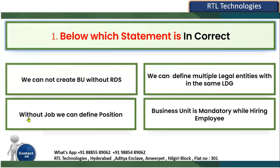The third statement is: without the job, we can define a position. This is incorrect — it is not possible. While creating a position, the system will ask you to first choose the business unit, then choose the department, then choose the job. Job is mandatory, so this is the incorrect statement.